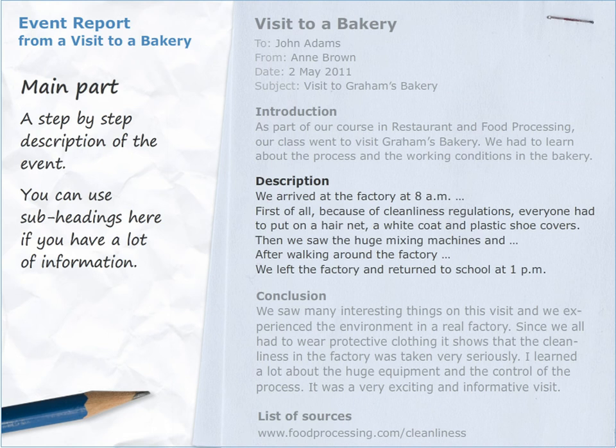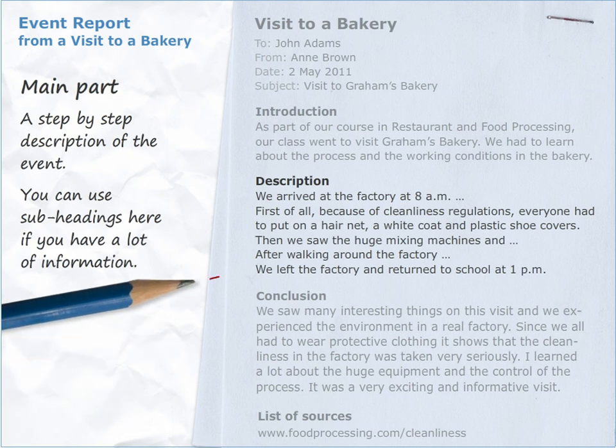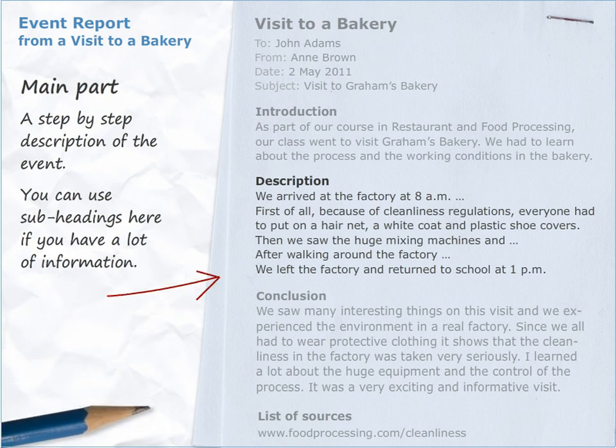Main part: a step-by-step description of the event. You can use subheadings here if you have a lot of information. We arrived at the factory at 8am. First of all, because of cleanliness regulations, everyone had to put on a hair net, a white coat and plastic shoe covers. Then we saw the huge mixing machines. After walking around the factory, we left and returned to school at 1pm.